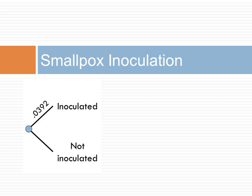If we want to draw a tree diagram for a smallpox inoculation, we start with the first event. In this case, whether the patient was inoculated. The probability of being inoculated. The probability of not being inoculated, not shown here, is 1 minus 0.0392.